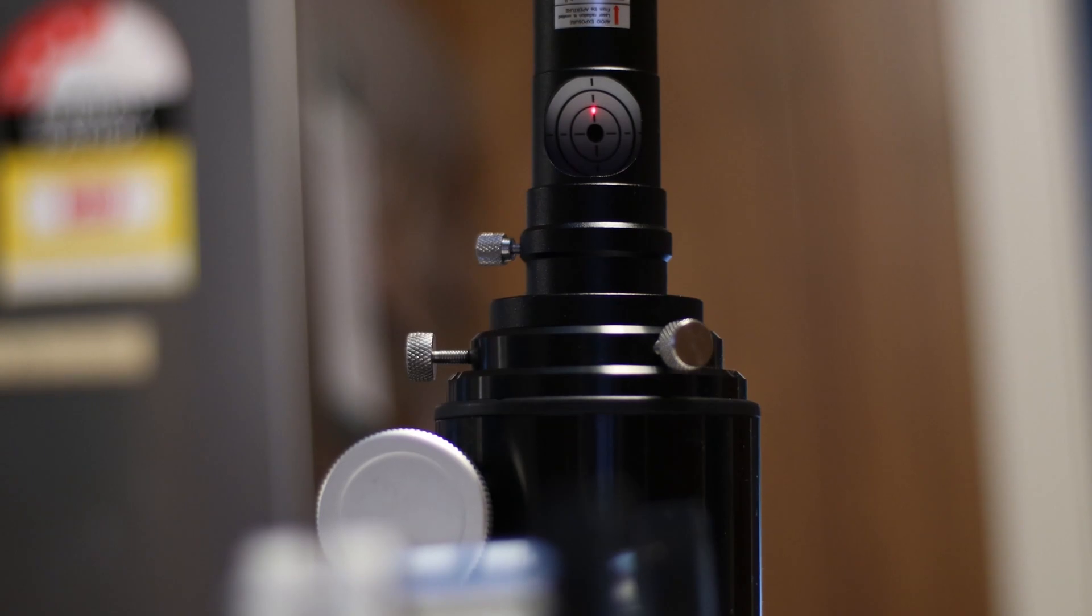Once that is done, head to the back of the scope and look at the laser collimator. We need the laser to disappear behind the black dot.